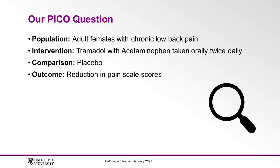For our search, let's start with the PICO question we showed you in the previous modules, concerning adult females with chronic low back pain. As a reminder, the population is adult females with chronic low back pain, the intervention is tramadol with acetaminophen taken orally twice daily, the comparison is a placebo, and the outcome is a reduction in pain scale scores.